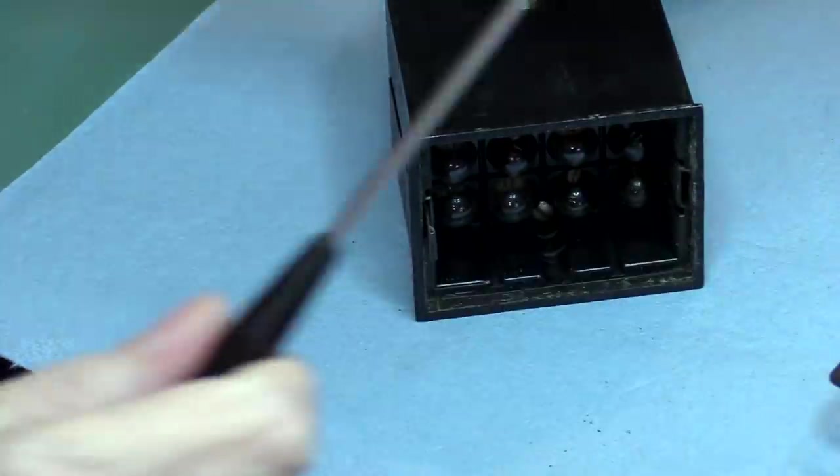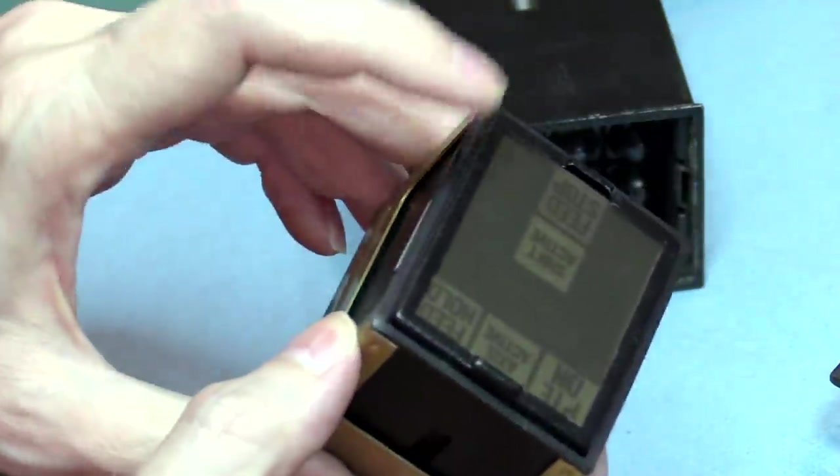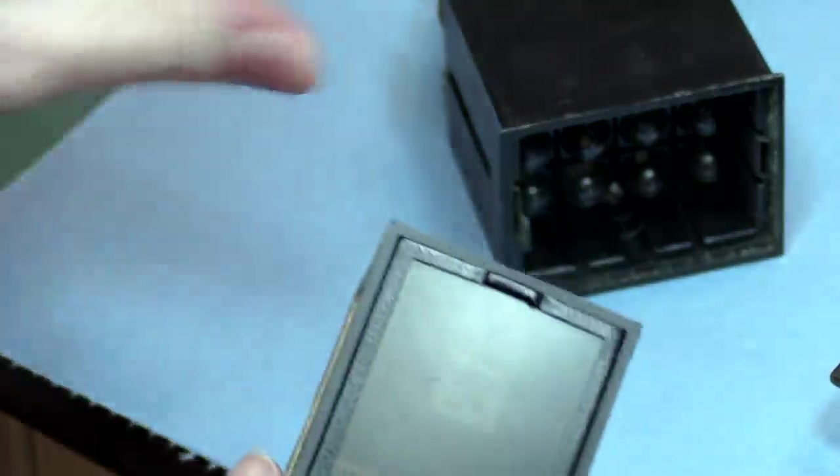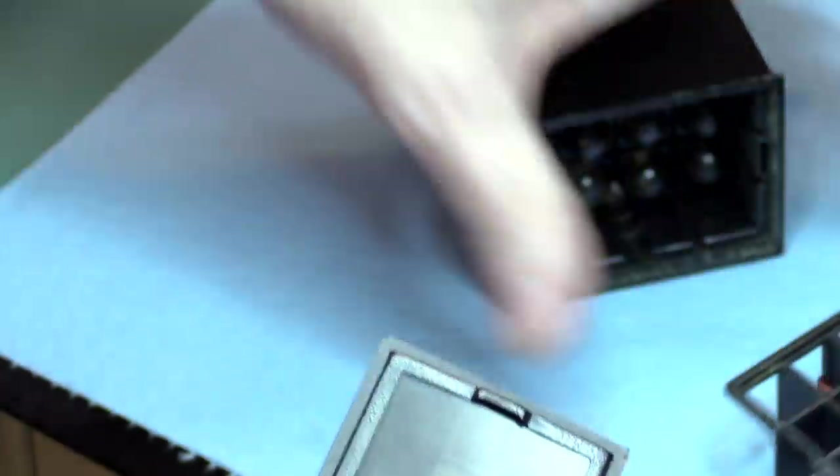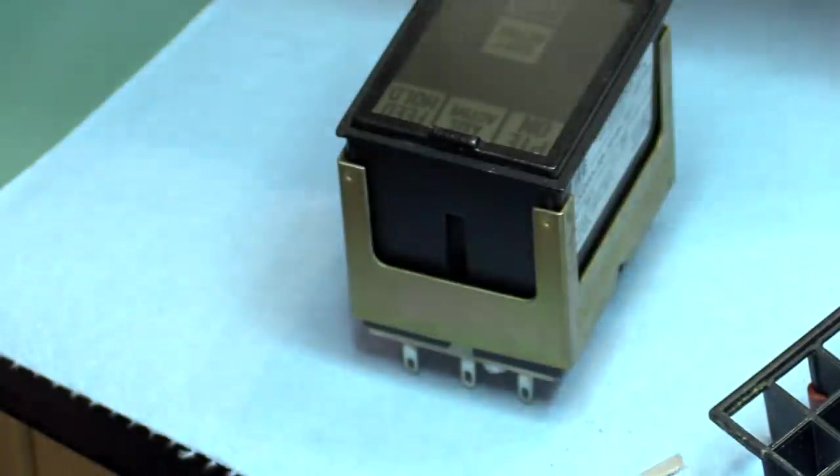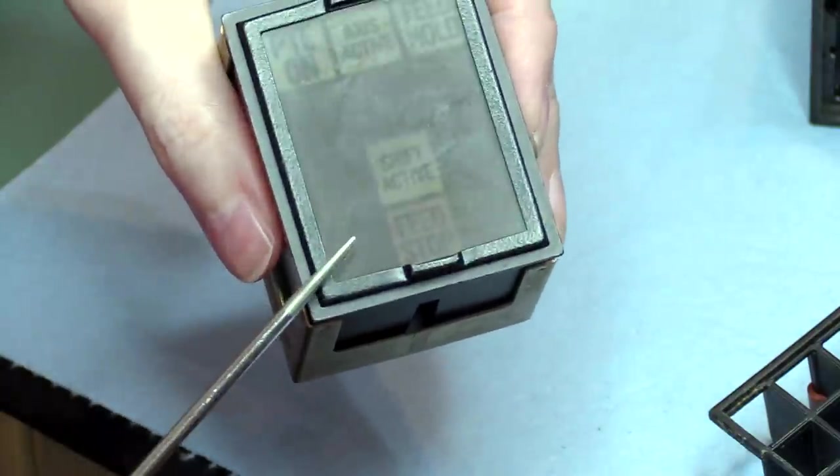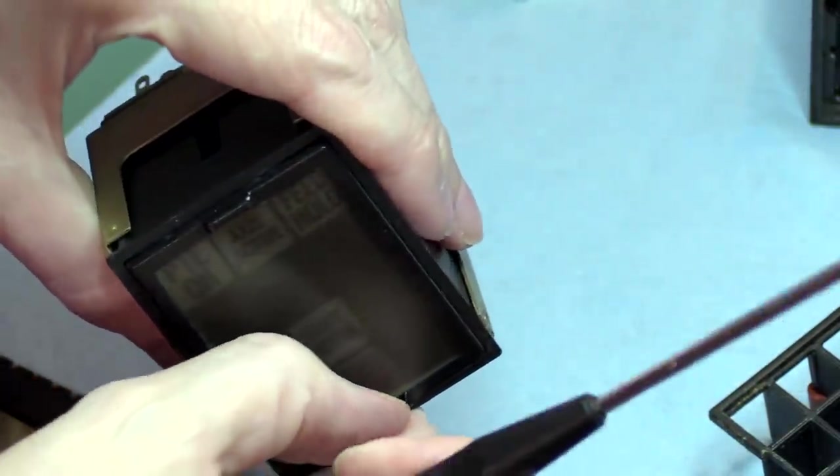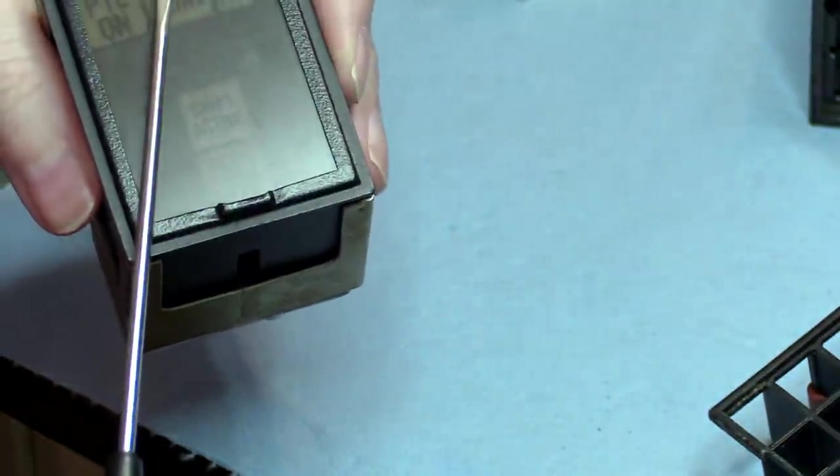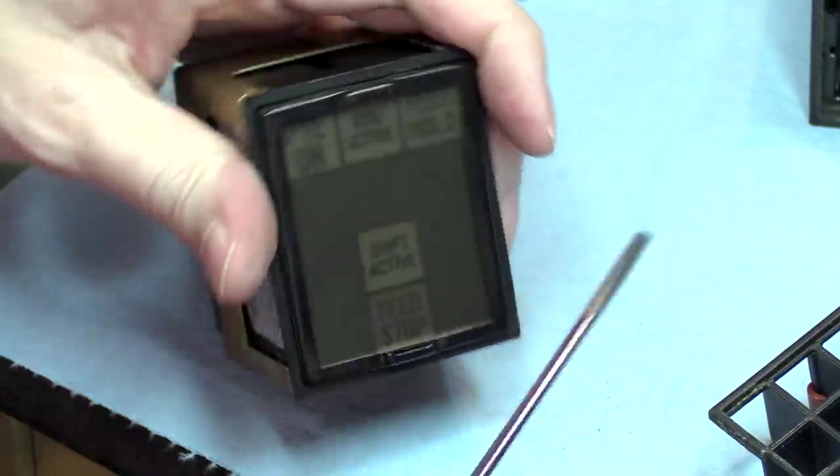Then you have this other outer layer, this outer bezel which I don't have for this one, that snaps onto those springs. There's one of the springs there, so that spring tab holds onto the bezel, which is also metal. It's a thin little metal bezel.